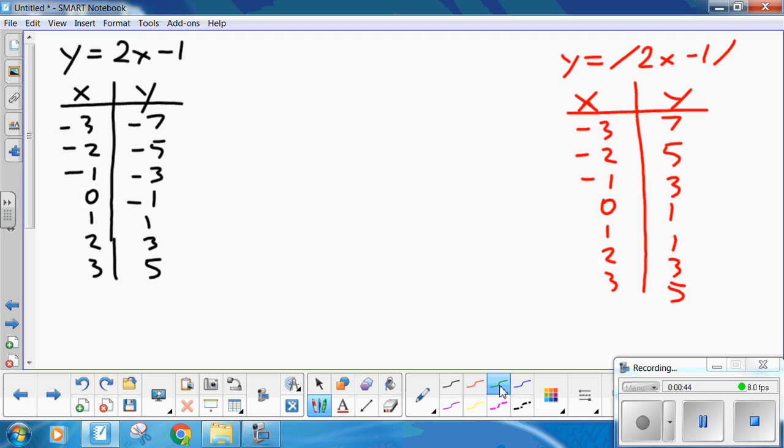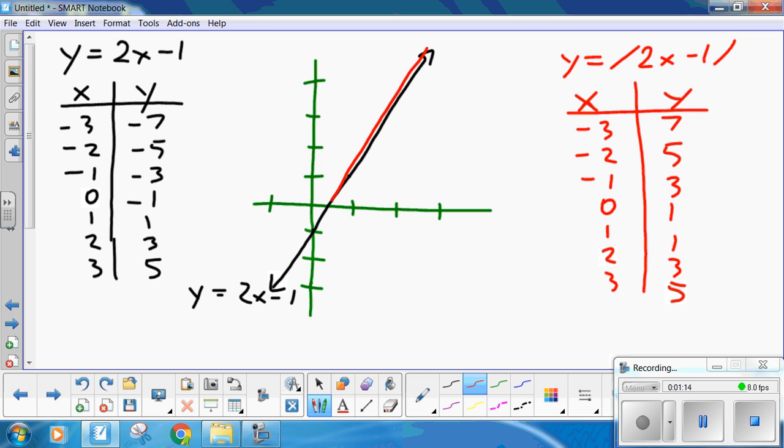So when graphed, goes something like 1, 2, 3. The original function, 2x minus 1, and up. y equals 2x minus 1 should look like that. The absolute value should look like that. y equals the absolute value of 2x minus 1. If you haven't got that, please double-check your calculator.